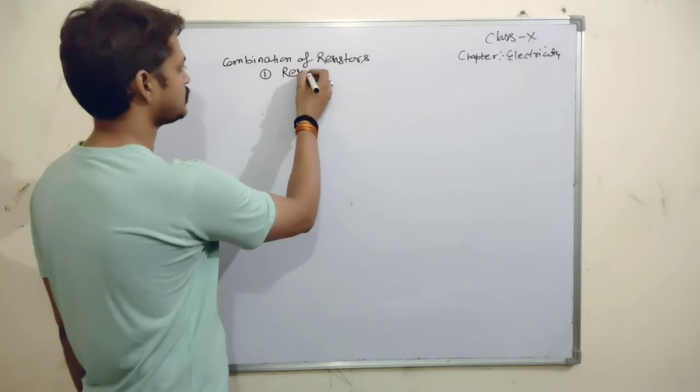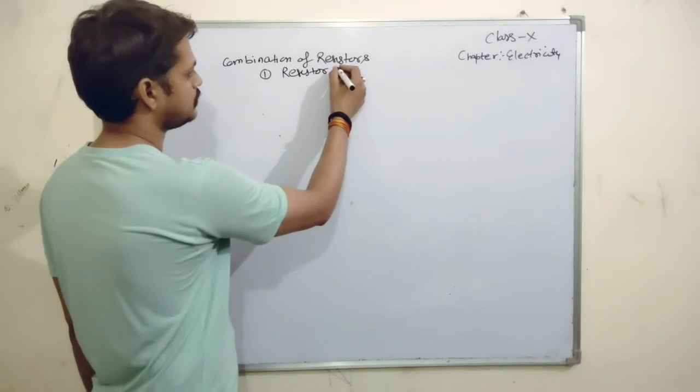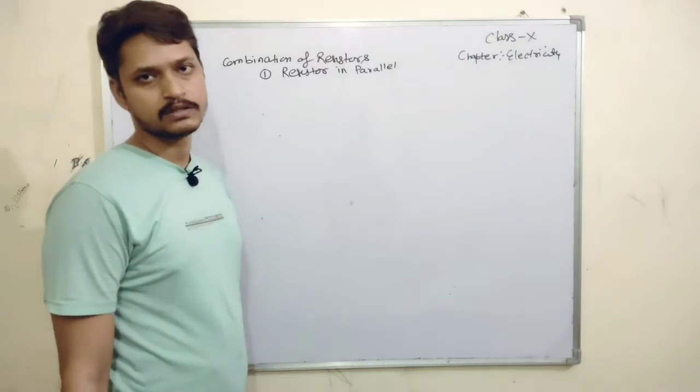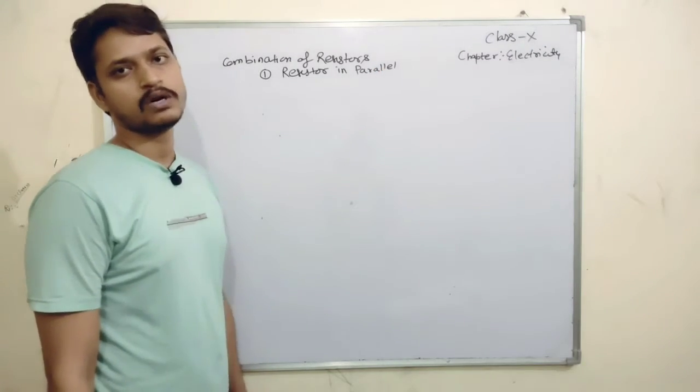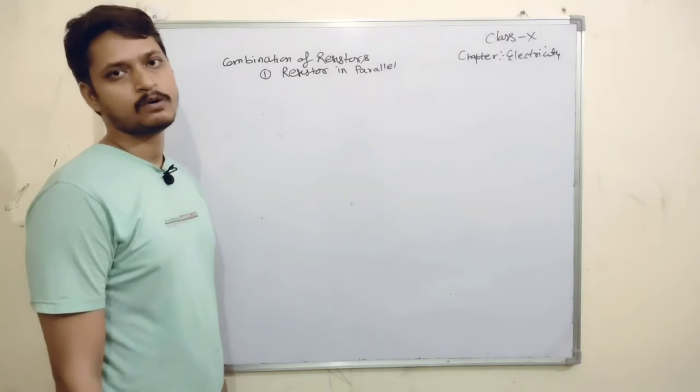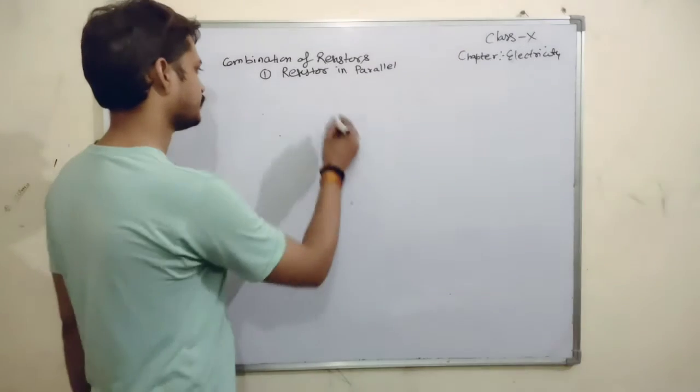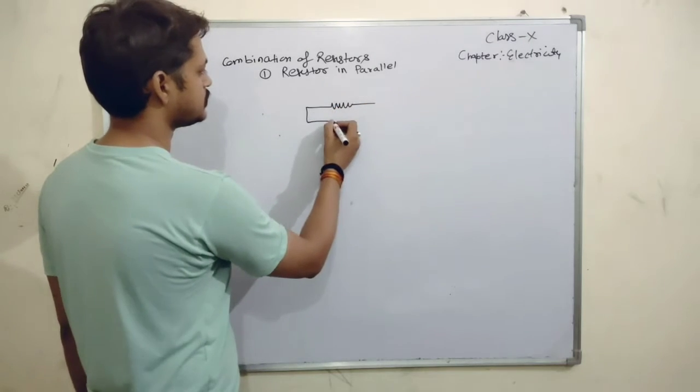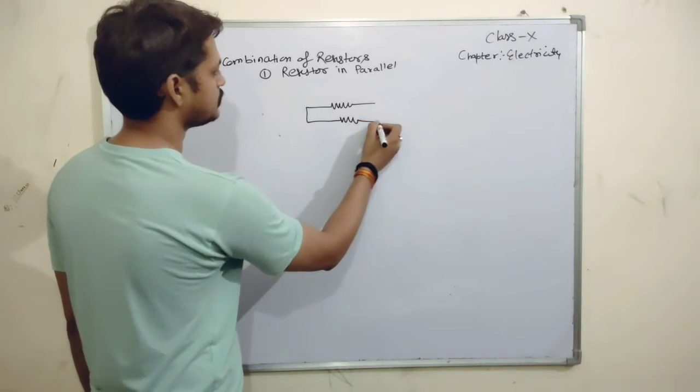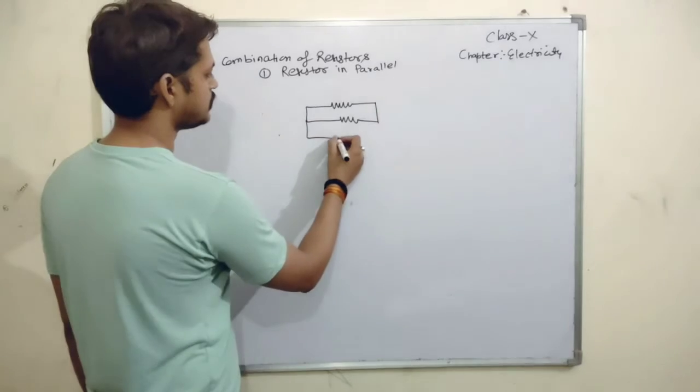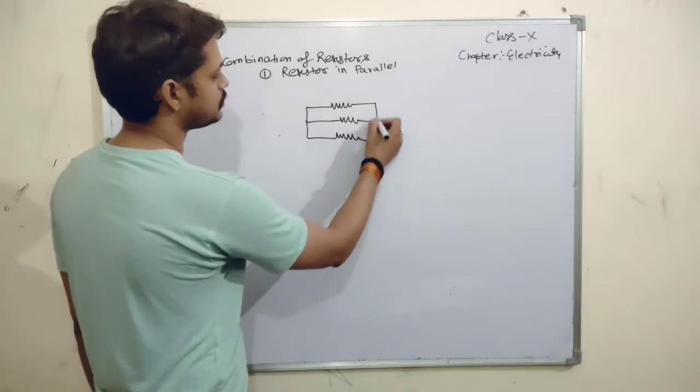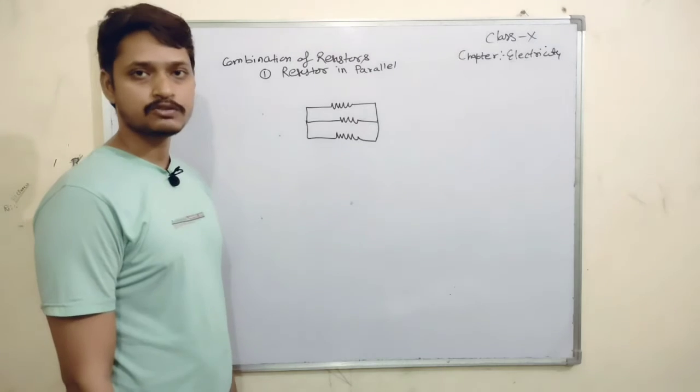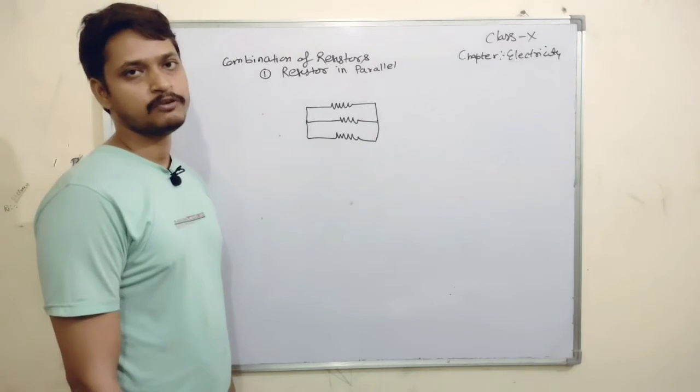Resistors in parallel. Let us consider three different resistors having value R1, R2 and R3. All are connected in parallel. What is the condition that we can say the resistors are in parallel combination? The condition is that in parallel combination, we have potential across each resistors will be the same.